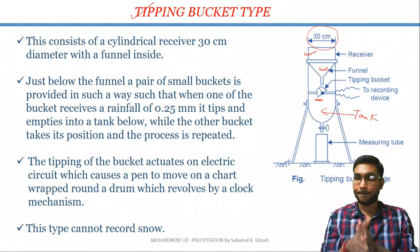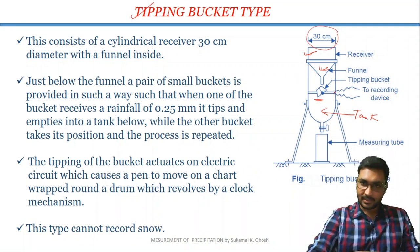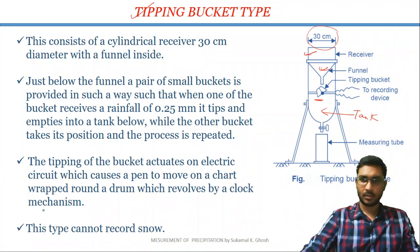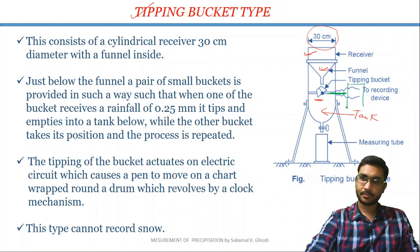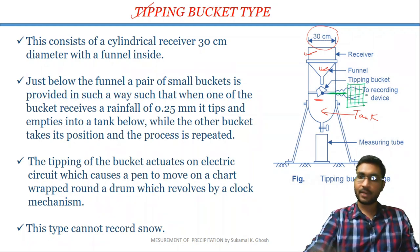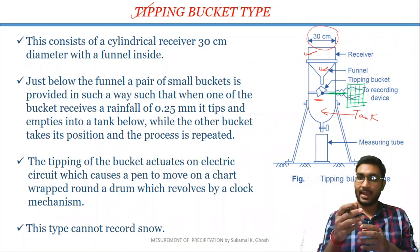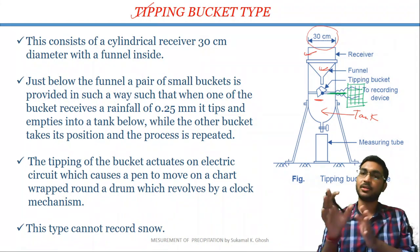The tipping of the bucket makes the pen move on the chart. A pen is attached and here also a paper is attached. When the bucket tips down, the tipping makes the pen move on the paper, and in this way the pen draws the mass rainfall curve on the paper. From the mass rainfall curve, we may calculate or measure the rainfall intensity at a particular time.